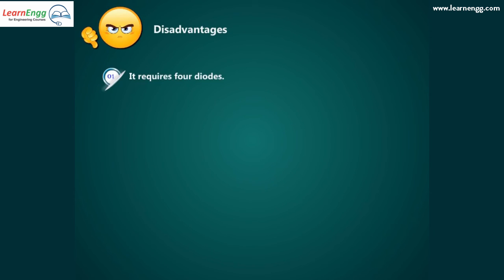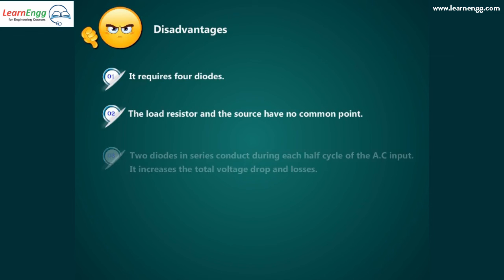Disadvantages. It requires four diodes. The load resistor and the source have no common point. Two diodes in series conduct during each half cycle of the AC input. This increases the total voltage drop and losses.